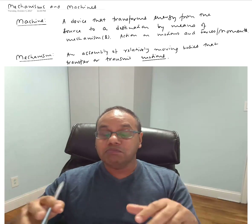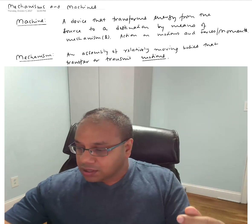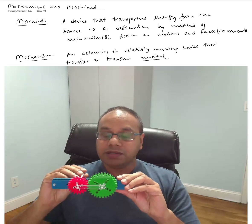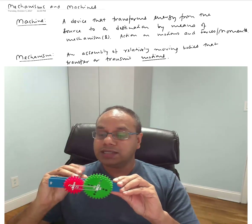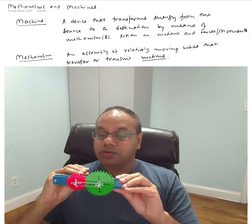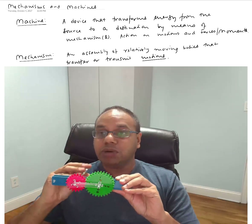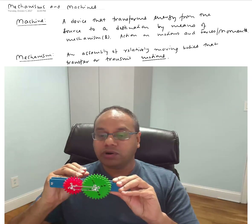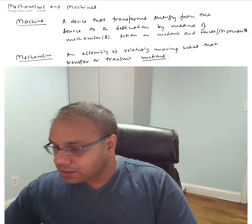Typically a machine would have many mechanisms inside it. Here is a pair of gears put together using a SnapPXA robot kit. As the red gear rotates, the green gear rotates in the opposite direction, and you might also notice the green gear is actually rotating at a much lower speed. For one revolution of the red gear, you might have only half or three-quarters of a revolution of the green gear. A gear system is an example of a mechanism.